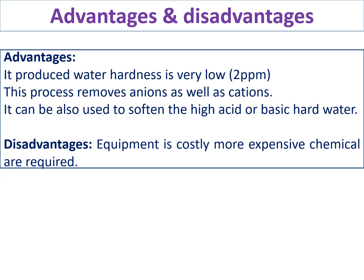Advantages of this process: it produces water with hardness below 2 ppm, making it ideal for industrial applications. It removes both anions and cations, producing deionized water, and is applicable to highly acidic or highly basic water as well. The only disadvantage is equipment cost and the use of many chemicals. However, industries can afford this because they need pure soft water — passing soft water into boilers avoids problems like corrosion, scale, sludge formation, and foaming.